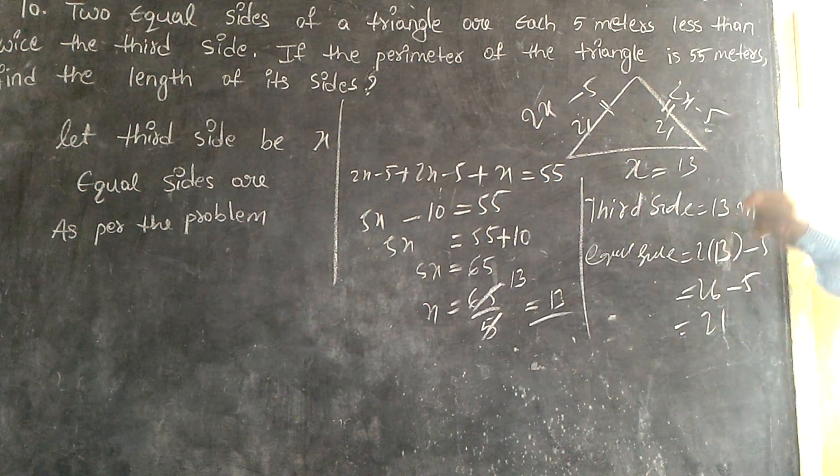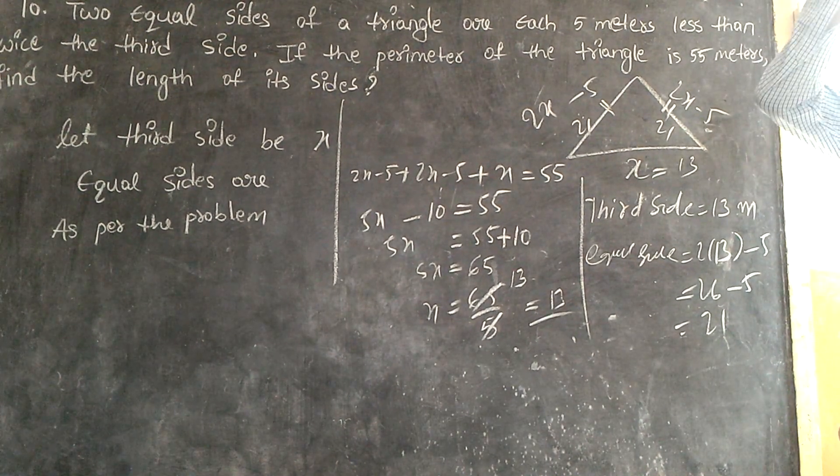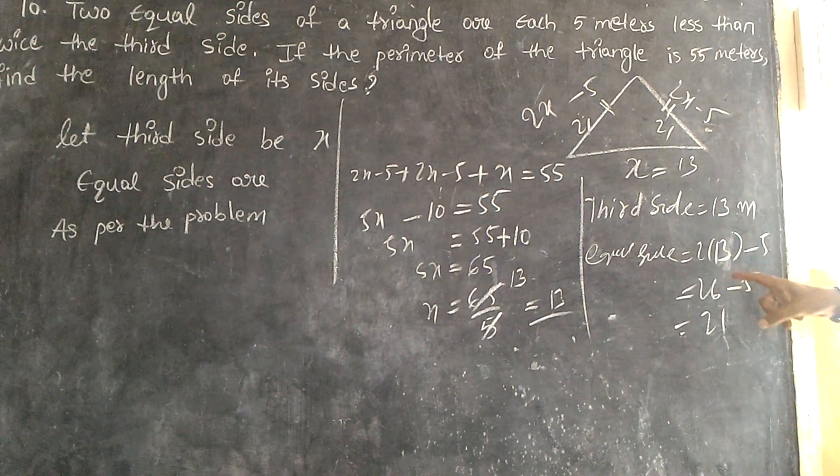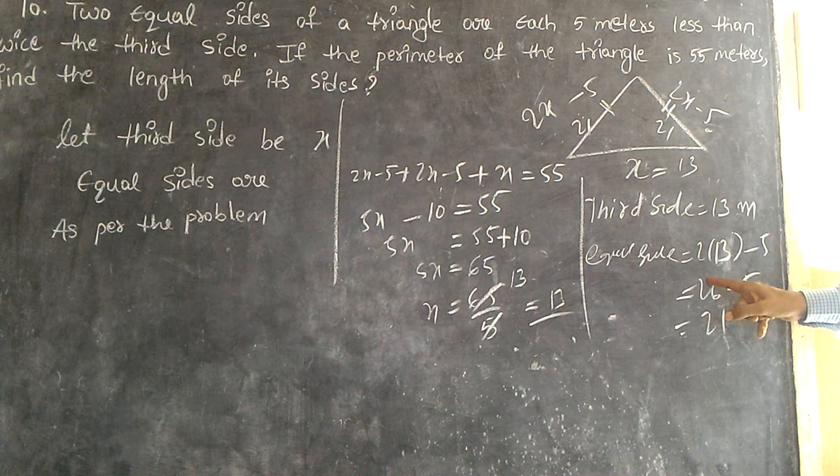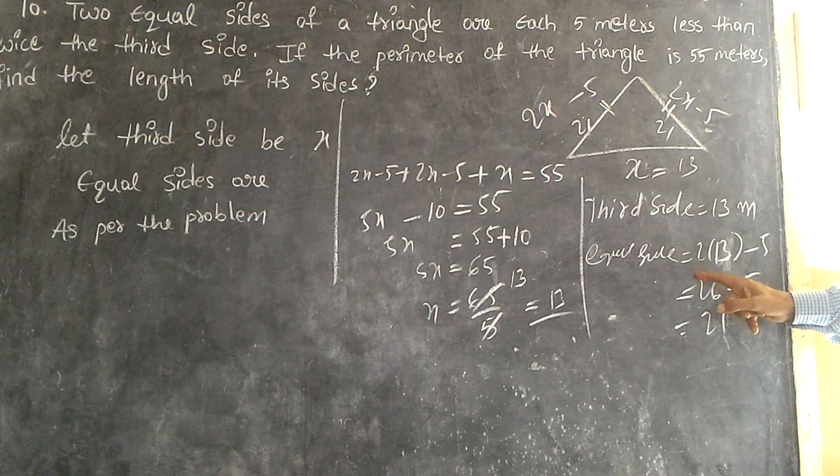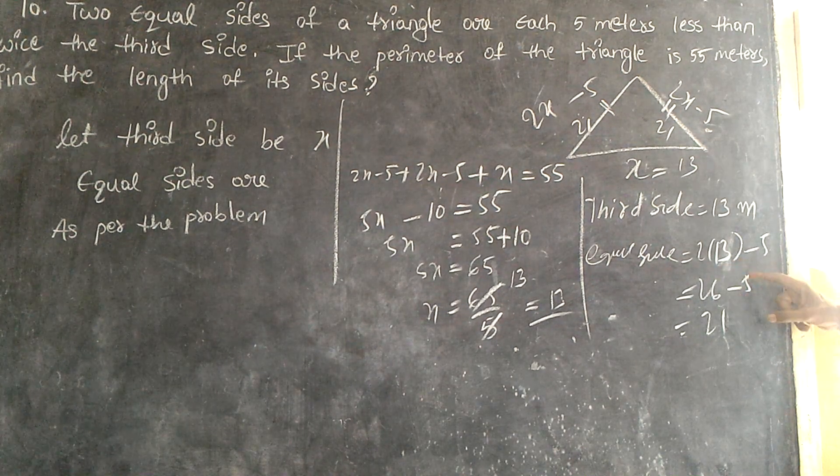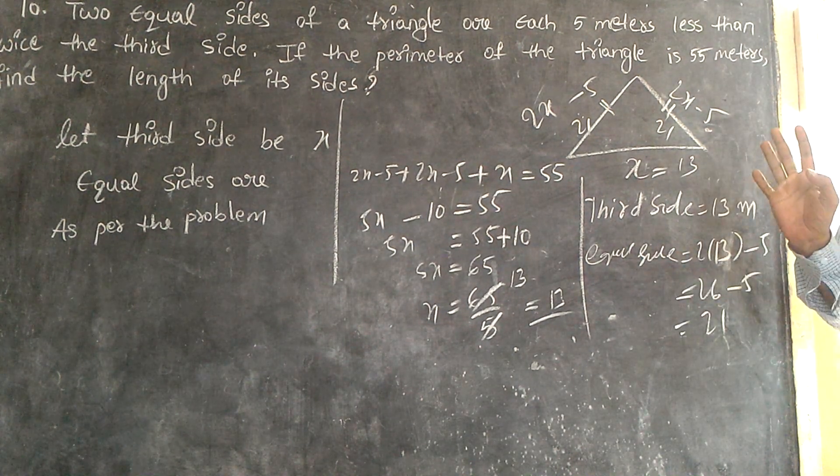Why? Equal - there are equal sides. Is it clear or not? 5 less than twice the third side. 2 times 13 minus 5. It's clear? Yes.